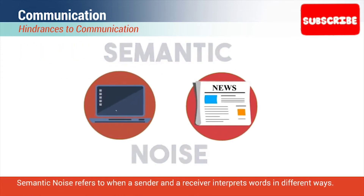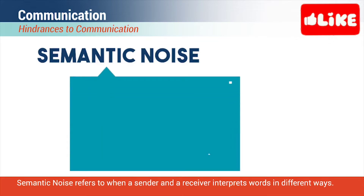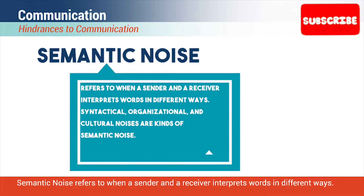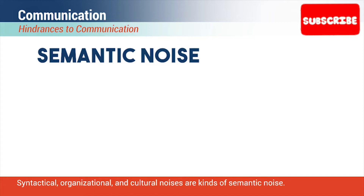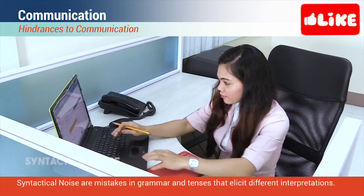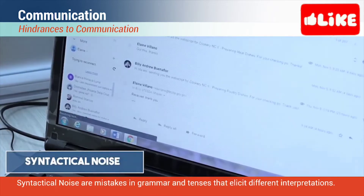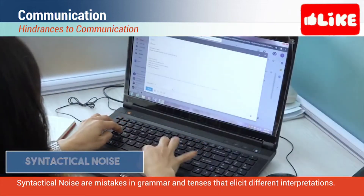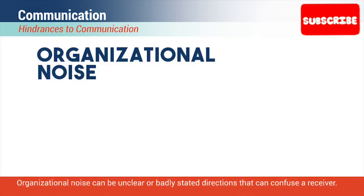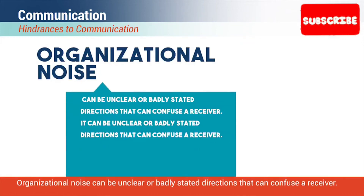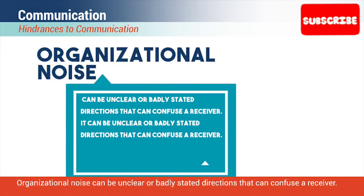Semantic noise refers to when a sender and a receiver interpret words in different ways. Syntactical, organizational, and cultural noises are kinds of semantic noise. Syntactical noise are mistakes in grammar and tenses that elicit different interpretations. Organizational noise can be unclear or badly stated directions that can confuse a receiver.